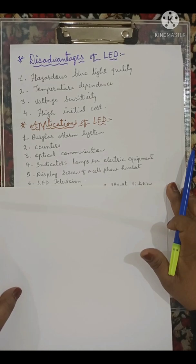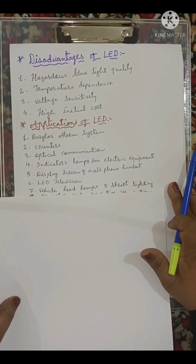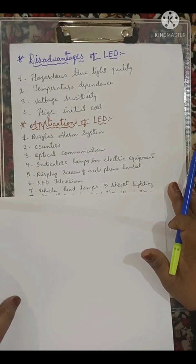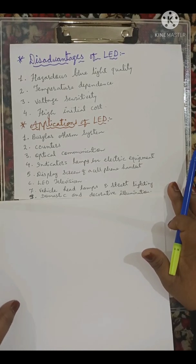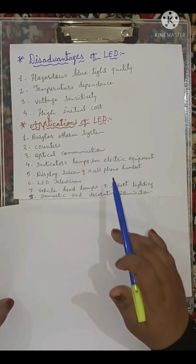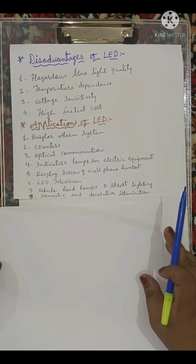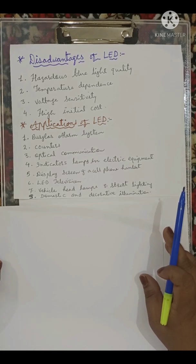Sixth application is LED television. Seventh: vehicle headlamps. Eighth: street lighting. Ninth: domestic and decorative illumination. These are the applications of LED. In board exam it will be asked like: write any two applications of LED for one mark, or write any four applications of LED for two marks.